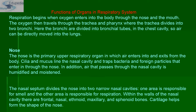The functions of organs in the respiratory system: respiration begins when oxygen enters the body through the nose and mouth. The oxygen then travels through the trachea and pharynx, where the trachea divides into two bronchi; the bronchi are divided into bronchial tubes in the chest cavity so air can be directly moved into the lungs. The nose is the primary upper respiratory organ through which air enters and exits the body. The cilia and mucus lining in the nasal cavity trap bacteria, foreign particles, or antigens that enter through the nose.